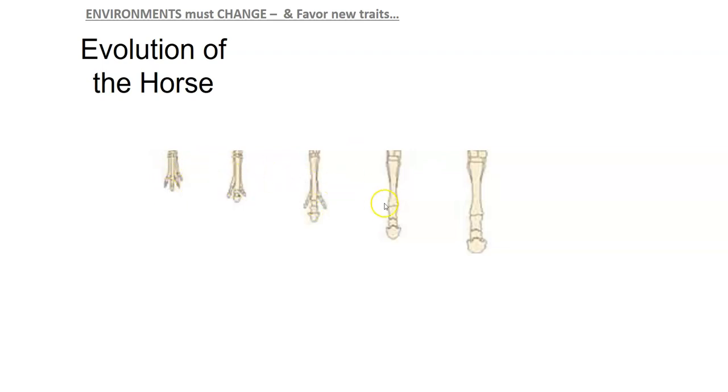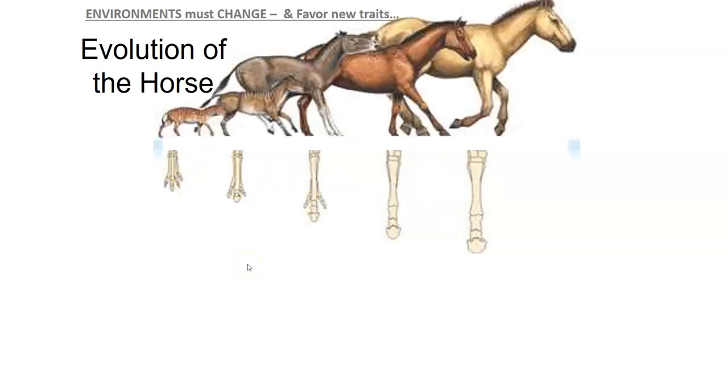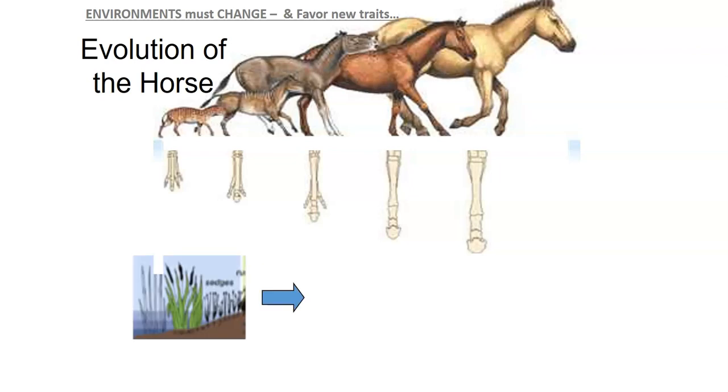These bones span over millions of years, and here this is what the horses who owned the bones looked like. Originally, the horse itself came from an ancestor that was no bigger than a cat, really.